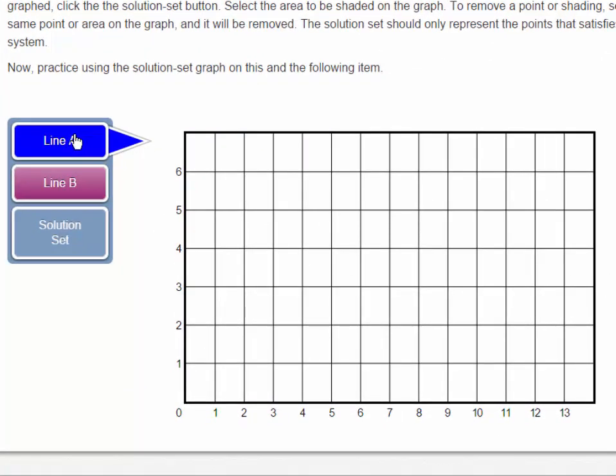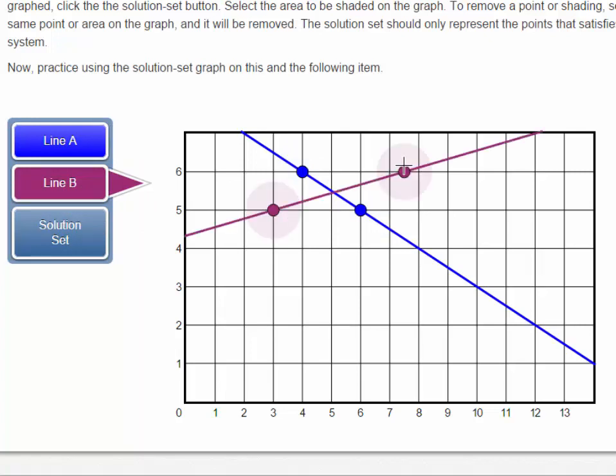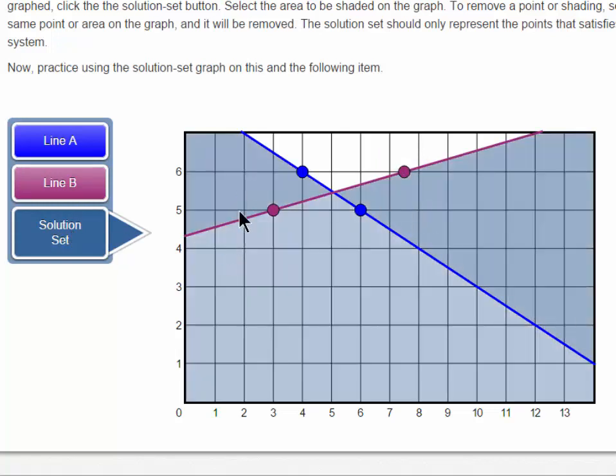So, if you select on a line button, you can create the first line. Once I select on the second line button, I can create the second line. Once I click on solution set, I can shade the area for the solution. Clicking on a shaded area will turn off the shading. Notice that if I'm selected on solution set, I cannot alter the line.